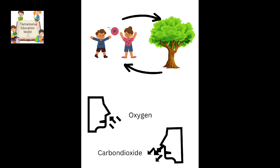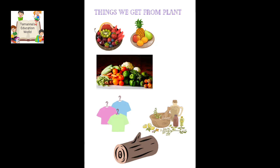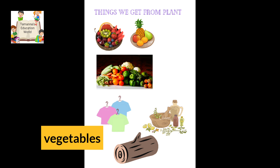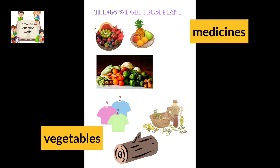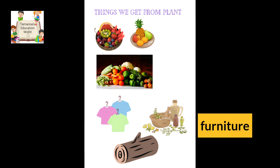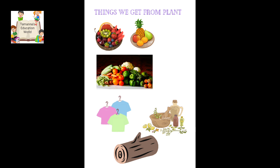Plants and human beings both depend on each other. We get many things from trees which we need very much. What are we getting from trees? Fruits, vegetables, medicines, wood — we make furniture from wood — and clothes. These are all very important for us to live.